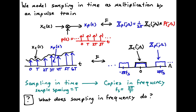Now if we think about this time domain picture, we can also think about the frequency domain picture. If we multiply two signals in the time domain, the Fourier transform of that is going to equal the convolution of the two individual Fourier transforms. So xp of jω, the continuous time Fourier transform, will be the convolution of xc of jω and P of jω, with a 1 over 2π scaling from our definition of the Fourier transform.